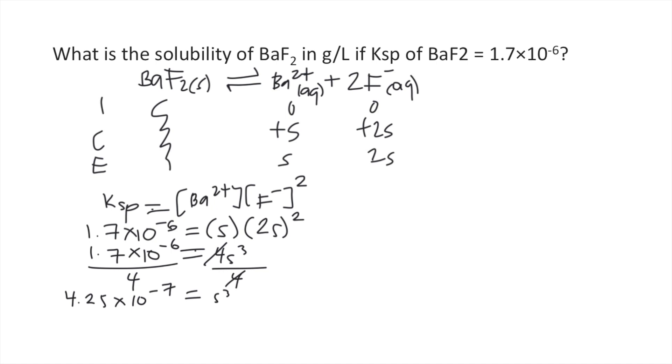Now all you have to do is to get S, you get the cube root of both sides. On the right side, the cube root of S cubed is just S. And on the left side, the cube root of 4.25 times 10 to the negative 7 is equal to approximately 7.518 times 10 to the negative 3.